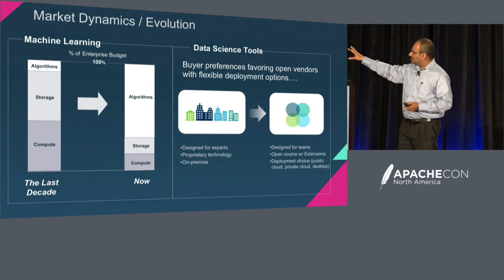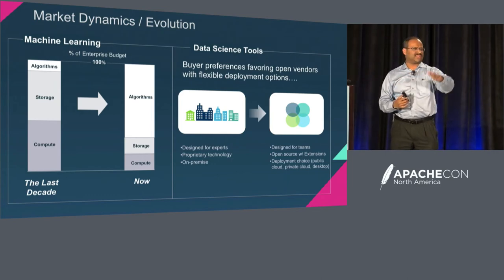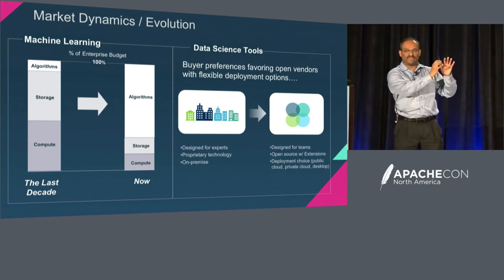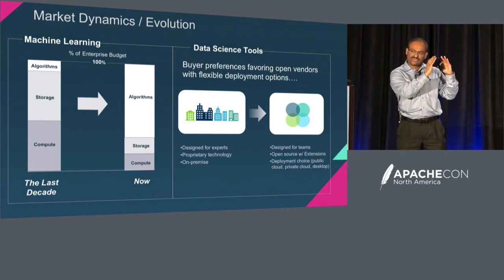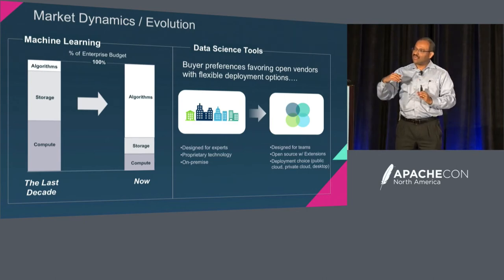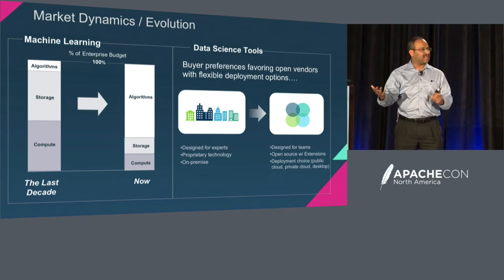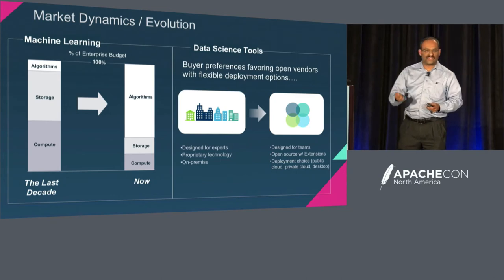The other part that's happening is that data science has become a team sport. It used to be — especially if you're doing SPSS or SAS or one of the existing technologies — a very contained space where you needed extreme expertise in that specific area. It was very difficult for the business analyst, the app developer, the data engineer to collaborate on machine learning projects. Now, where the industry is headed is this collaborative idea — team sport — where all of these people can collaborate. The concept of democratization is catching on.